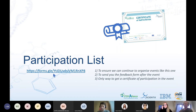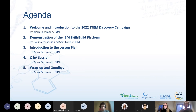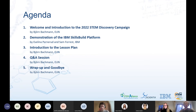This participation list helps us prove that this event took place so we can continue to organize events like this in the future. If you're interested in a certificate of participation, this is the only way to request one. Let's move on with the agenda. We have a full program today and we will begin with a demonstration of the IBM SkillsBuild platform by Evelina Pannerud and Sam Forrest from IBM, followed by an introduction to the lesson plan template for the STEM Alliance IBM SkillsBuild competition. You can share your questions in the chat throughout the webinar.